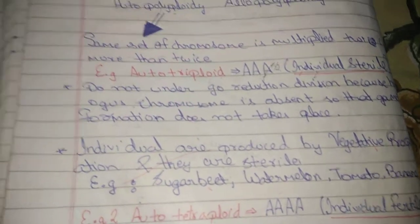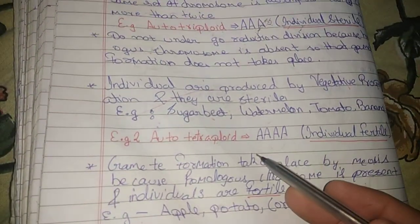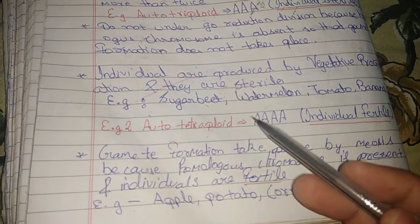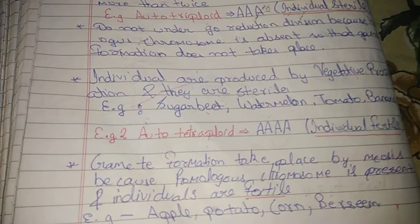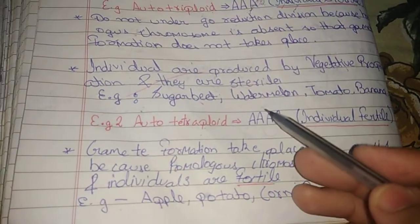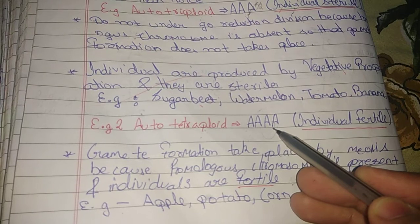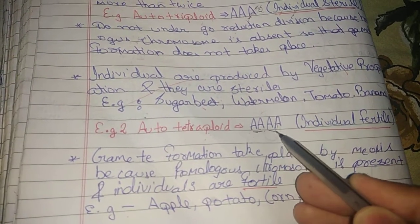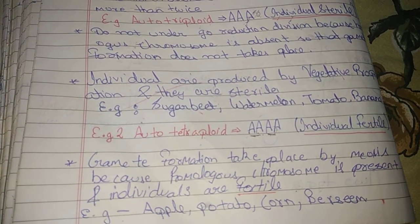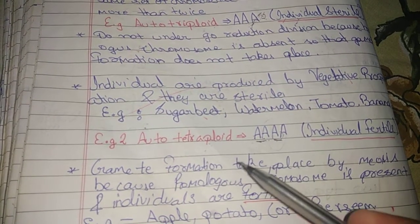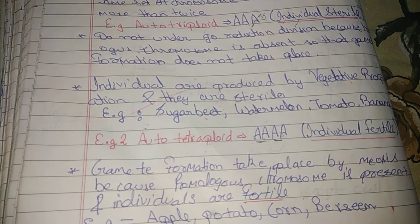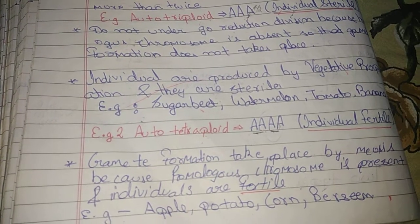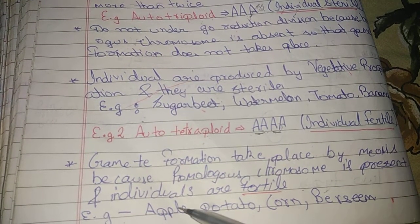Watermelon and banana are also examples. Auto tetraploid means the same set of chromosomes multiplied four times. Here, individuals are fertile because homologous chromosomes are present, so meiotic division and gamete formation take place. Examples include apple and potato.